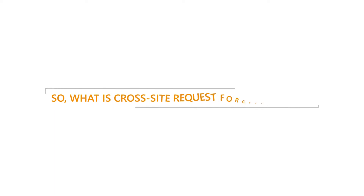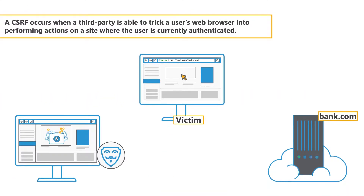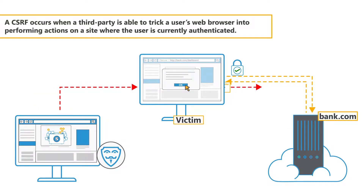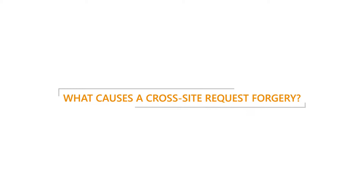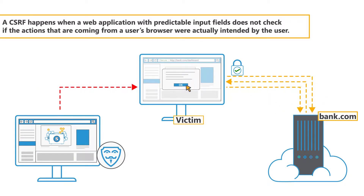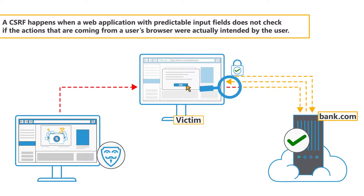What is cross-site request forgery, or CSRF? A CSRF occurs when a third party is able to trick a user's web browser into performing actions on a site where the user is currently authenticated. A CSRF happens when a web application with predictable input fields does not check if the actions coming from a user's browser were actually intended by the user.